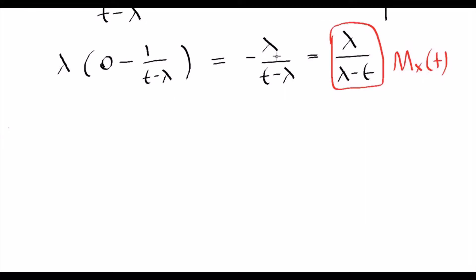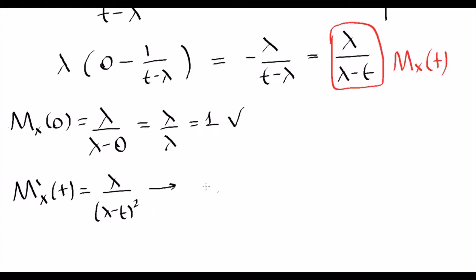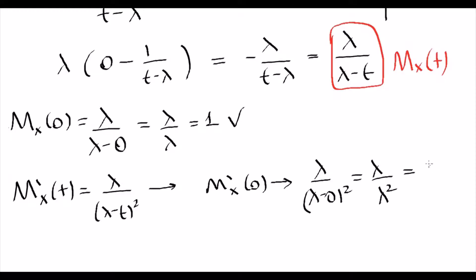So lambda over lambda minus t is our moment generating function. Let's confirm that MGF at zero equals one: lambda over lambda minus zero equals lambda over lambda, which equals one — confirmed. Now let's take the derivative. The derivative of lambda over lambda minus t is lambda over (lambda minus t) squared. Plugging in zero gives lambda over lambda squared, which is 1 over lambda. So the expectation of the exponential distribution is 1 over lambda.